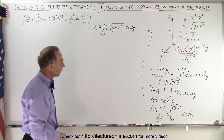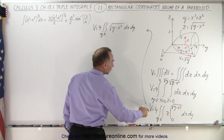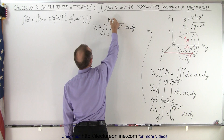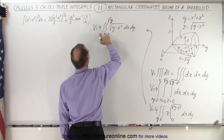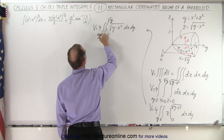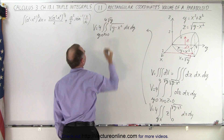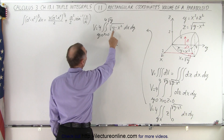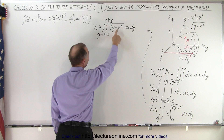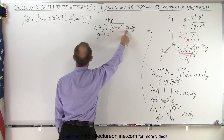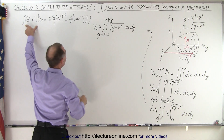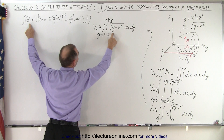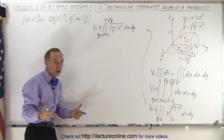Notice my limits for x go from zero to the square root of y, and my y limit goes from zero to four. Now integrating this, notice that y is held constant and x is my variable. This is the same format where instead of a squared I have y, so a is essentially the square root of y.